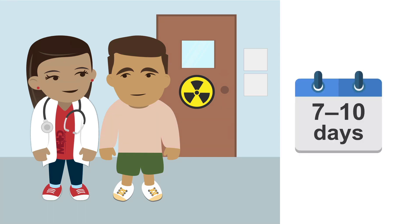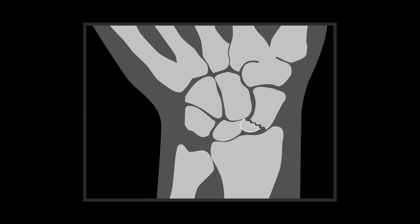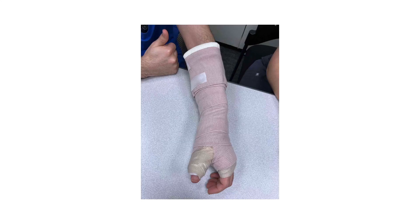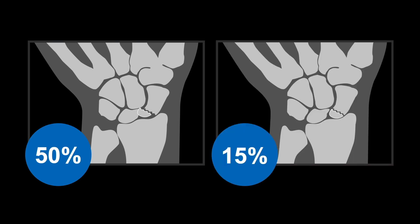If a fracture is seen on the repeat x-ray, the patient will need to follow up with a hand surgeon and likely have a cast for 5 more weeks. On the other hand, if the initial x-ray shows a displaced fracture — especially in the proximal scaphoid — place the patient in a thumb spica splint and consult the surgeon the same day, as displaced fractures have a nonunion rate of 50% compared to 15% in non-displaced fractures, and often require operative management.